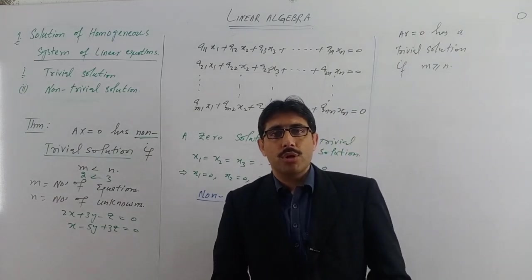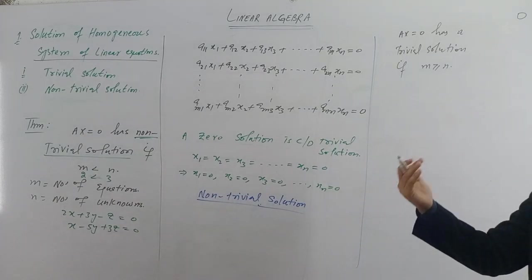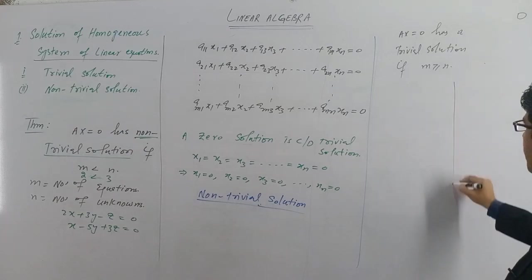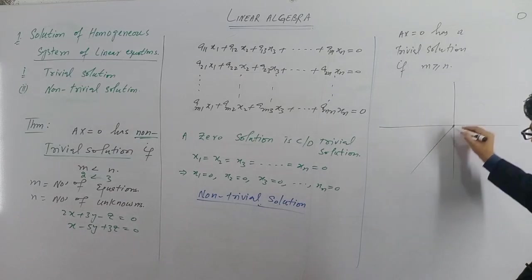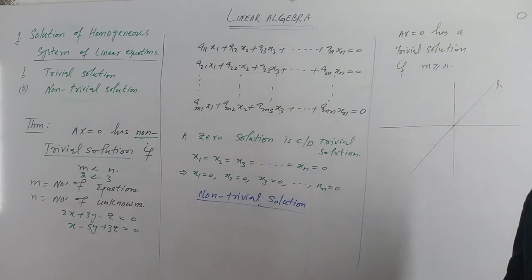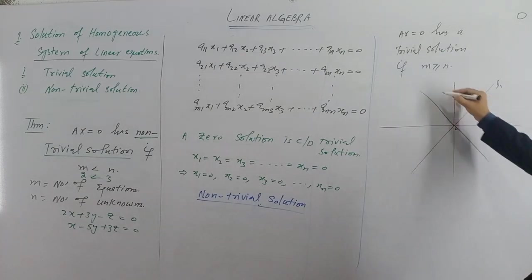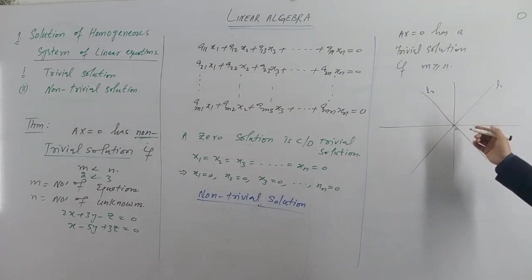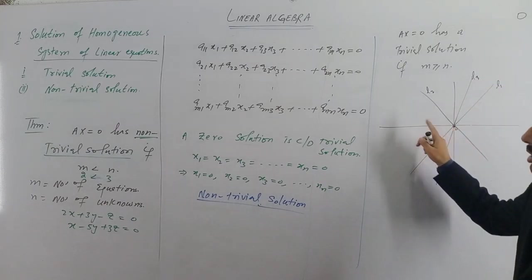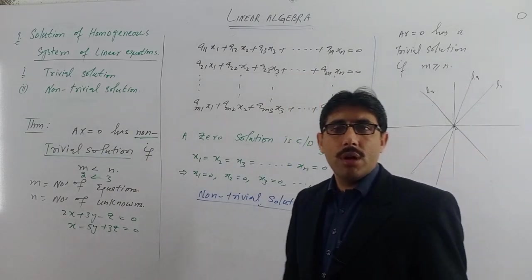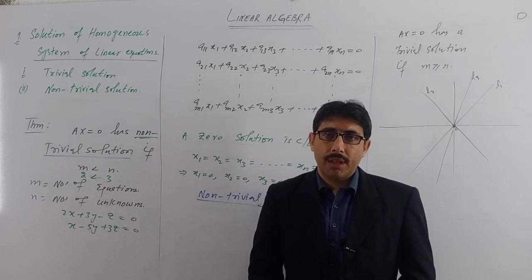Graphically, for any homogeneous system — whether you have two, three, or more equations — if you draw them geometrically, every line passes through the origin. So for equation one and equation two, both pass through the origin zero. Thus the zero solution always satisfies the homogeneous system of equations.